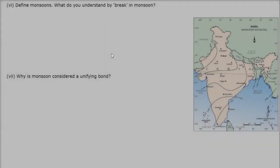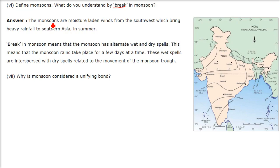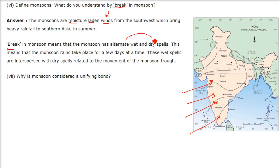What do you understand by a break in the monsoon? Monsoons are moisture-laden winds from the southwest which bring heavy rainfall in southern Asia in summer. The break in the monsoon means that the monsoon has alternate wet and dry spells. Monsoon rains take place for a few days at a time, and these wet spells are interspersed with dry spells related to the movement of the monsoon trough.